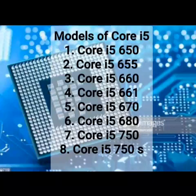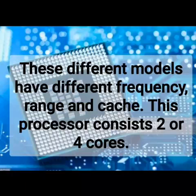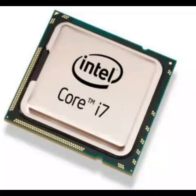Core i5 processor का 750S model सबसे expensive होता है इन सारे models में। इन सभी models में different frequency, different range और different cache memory होती है, और इनकी performance भी different होती है। अब next है Core i7 processor।